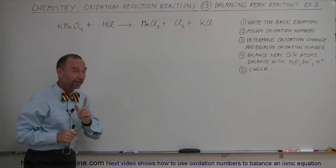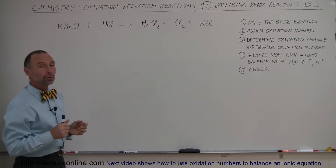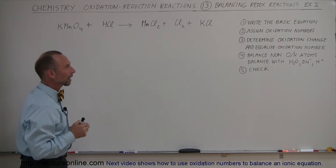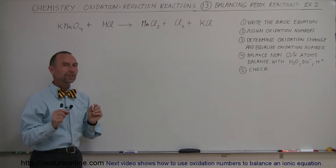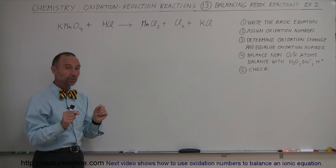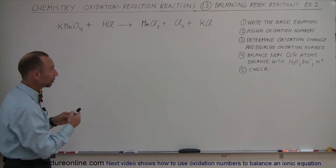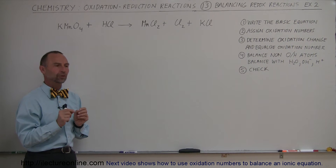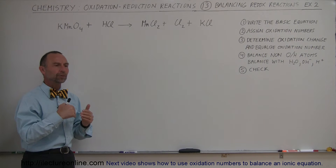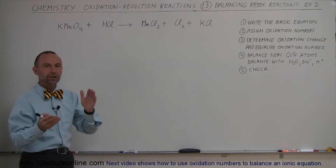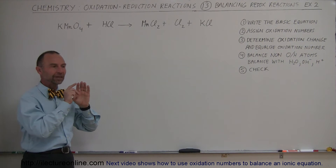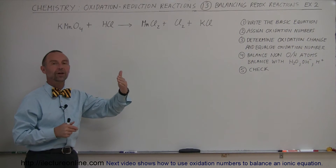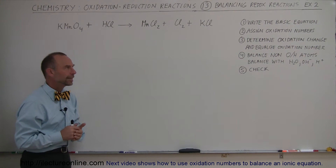Notice that this equation is not yet balanced. The next thing we're doing is assigning the oxidation numbers to all the atoms in the equation. After that, we need to determine which of the oxidation numbers are changing for which elements or atoms. At that point, we want to equalize the oxidation numbers first — that means we probably have to multiply one by a number and the other by another number so that the products are equal, one being an oxidation number increase, the other one being an oxidation number decrease.